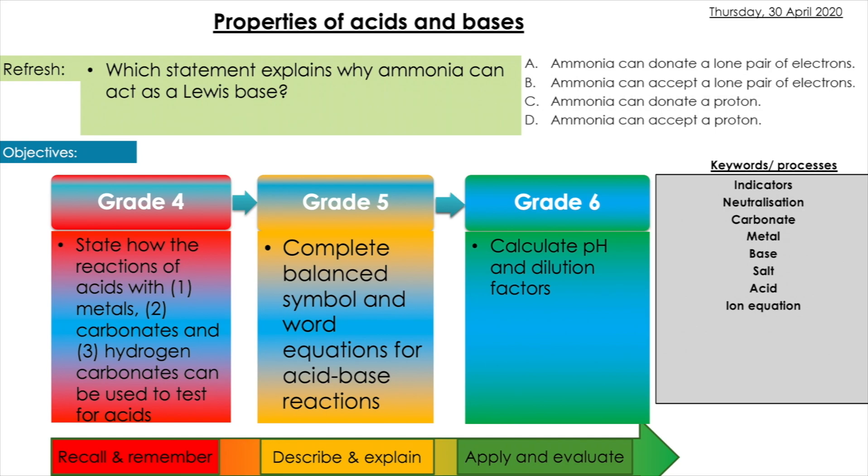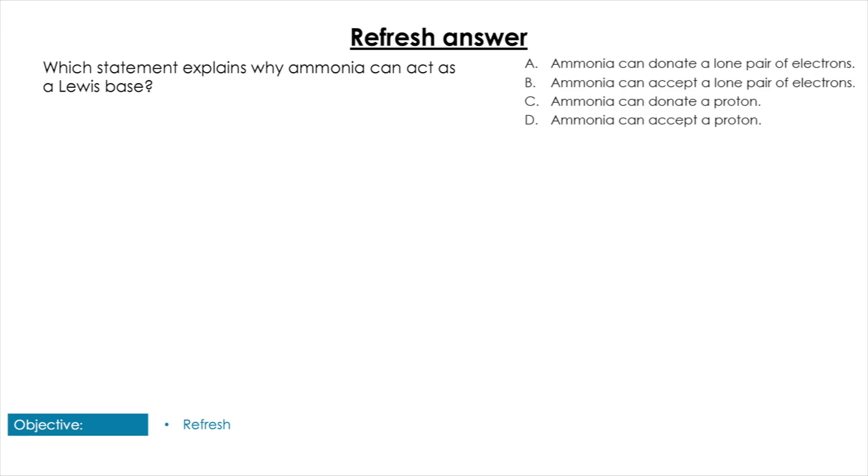Today we're going to be looking at the different types of reactions of acids and bases and looking at how dilutions work as well. Here's a little refresh to get you started: which statement explains why ammonia can act as a Lewis base? Pause the video here to give yourself some time for that. Okay, great. Well, the simplest thing to do would obviously be to draw the Lewis structure of ammonia. If we do that, we see that it's got a lone pair, which in itself already cancels out B, C, and D, leaving A.